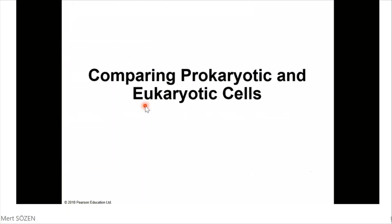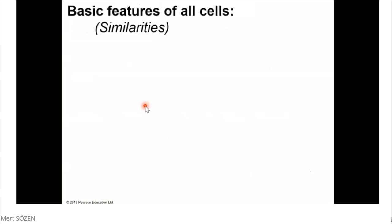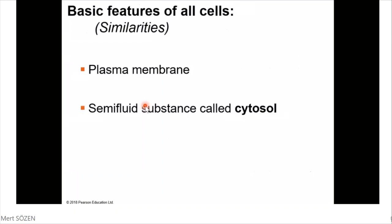Let's compare the prokaryotic and eukaryotic cells. What does it mean to be a prokaryotic or eukaryotic cell? We'll look at the basic features — the similarities of prokaryotic and eukaryotic cells. First: plasma membrane. Both of them have a plasma membrane, which is the cellular membrane, or cell membrane.